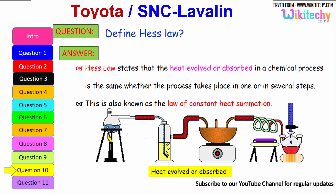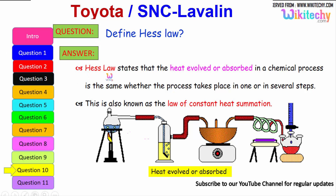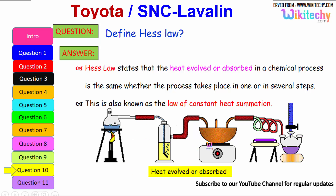Define Hess's Law. This is one of the very important questions. In the context of heat generated between objects and emissions, Hess's Law states that the heat evolved or absorbed in a chemical process is the same whether the process takes place in one step or in several steps. This is also known as the law of constant heat summation.